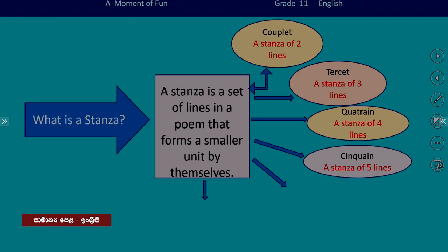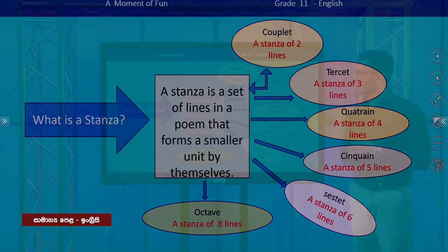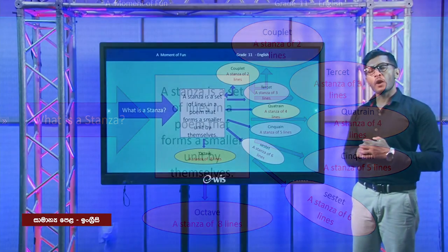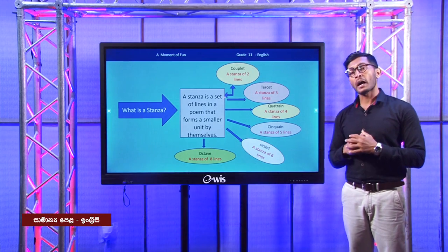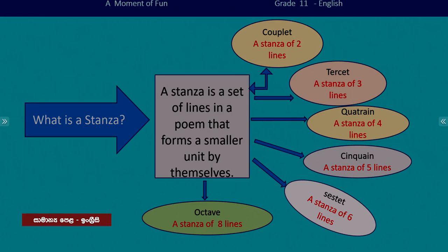And if a stanza has got 5 lines, we call it a quintain. And if there are 6 lines in a stanza, we call it a sestet. And an octave is a stanza which has 8 lines. Now in our poem Leisure, we have couplets — stanzas with 2 lines.